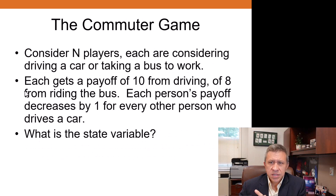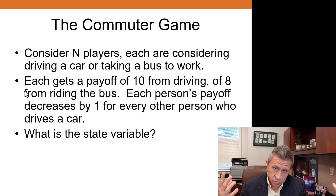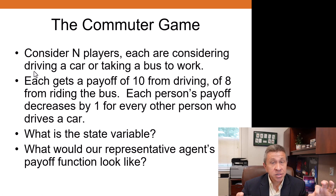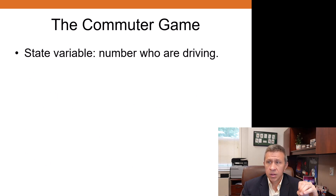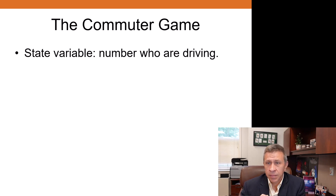We will start with the commuter game. We'll consider N players, each considering driving a car or taking a bus to work. Every player gets a payoff of 10 from driving and 8 from riding the bus. Each person's payoff decreases by 1 for every other person who drives a car. The two questions: what is the state variable, and what would our representative agent's payoff function look like? The state variable is the number of people who are driving — that's what each player needs to know to make their best response.